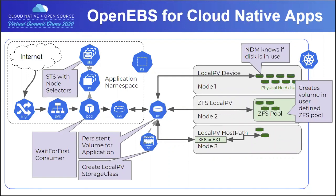A common denominator across all these options is NDM — Node Disk Manager — a core component of OpenEBS that can also be installed separately. NDM allows you to monitor your storage devices just like any other Kubernetes resource. The block device is a resource that OpenEBS implements — you can get different properties and see which block device is used by which application or storage engine.